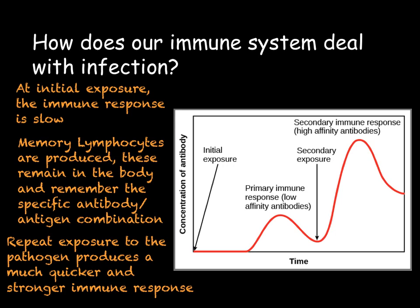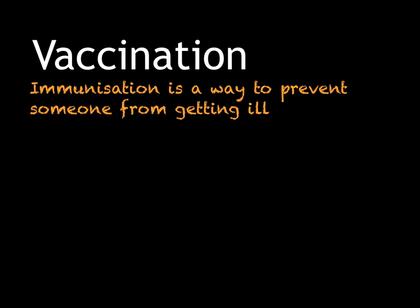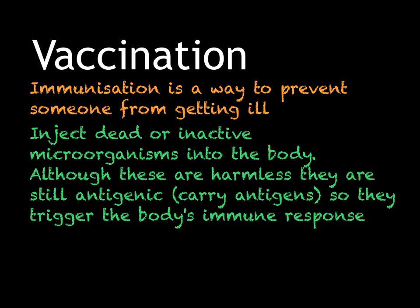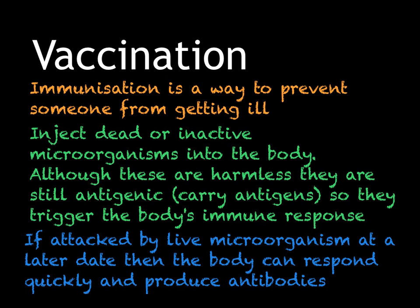We can use the body's immune system to create immunizations and vaccinations, which are a way of preventing someone from becoming ill. We currently immunize against many diseases including measles, mumps and rubella. Immunization involves injecting dead or inactive microorganisms into the body. These are antigenic, so they carry antigens — even though they're harmless, the body will still make antibodies. Therefore, the antigens trigger the production of memory lymphocytes. If the live, full-power microorganisms of the same disease enter the system later, they'll be killed very quickly by the antibodies already developed against them, giving the body an immune response to very dangerous and often fatal diseases.